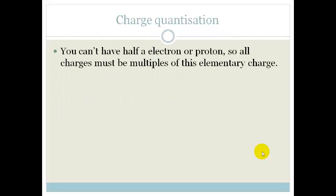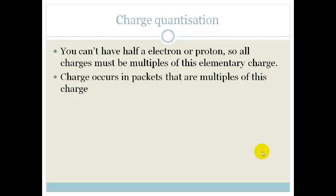So you can't get half an electron or half a proton. The charges that are being transferred between different objects are always going to be multiples of this elementary charge. Charge occurs in packets that are always multiples of this charge. So we say that the charge is quantized.